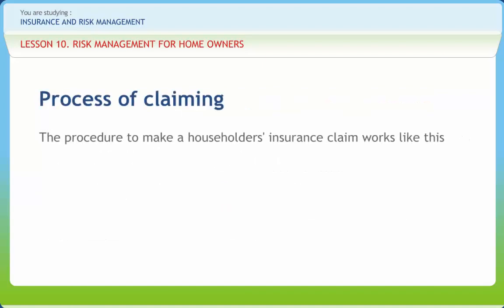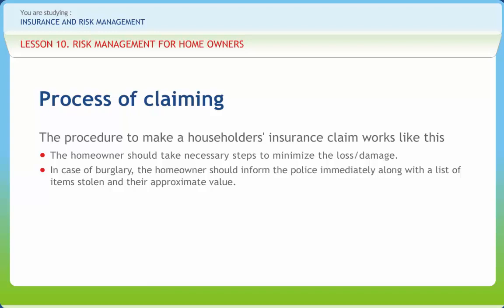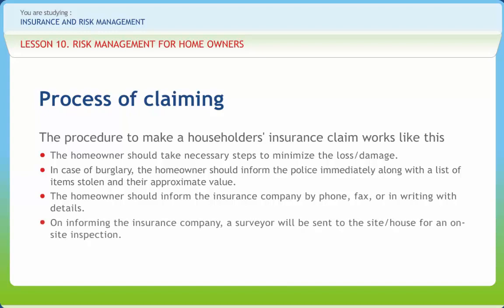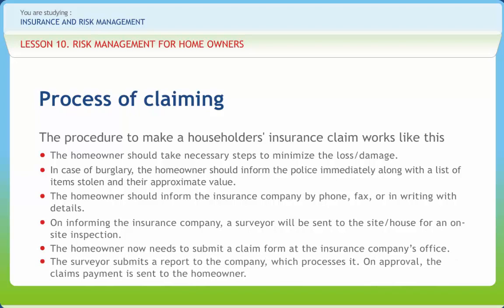The procedure to make a householder's insurance claim: the homeowner should take necessary steps to minimize the loss or damage. In case of burglary, the homeowner should inform the police immediately along with a list of items stolen and their approximate value. The homeowner should inform the insurance company by phone, fax, or in writing with details. A surveyor will be sent to the site for an on-site inspection, and the homeowner should extend full cooperation and provide necessary documents to substantiate losses. The homeowner then submits a claim form at the insurance company's office, the surveyor submits a report, and on approval the claim payment is sent to the homeowner.